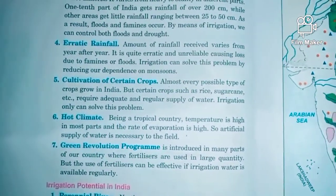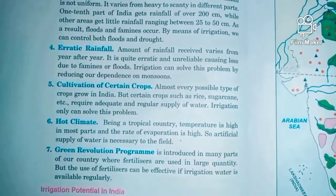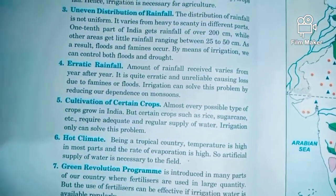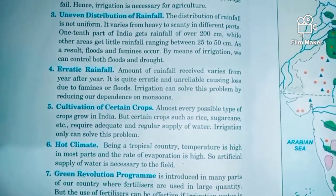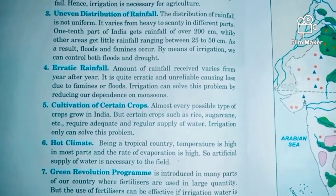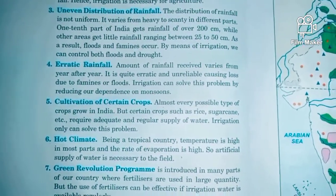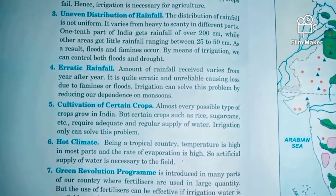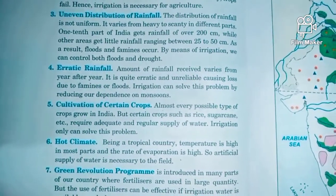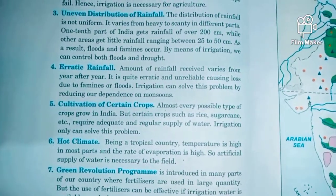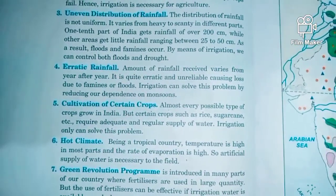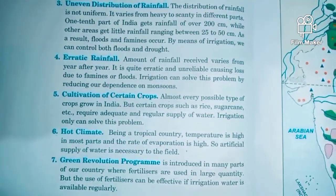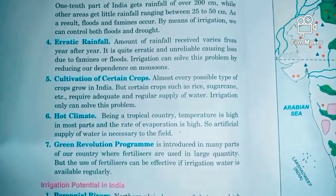Another reason is the cultivation of certain crops. Some areas tend to cultivate specific crops every year, like rice or sugarcane, but these crops require a large and regular supply of water. In the off-season, a good amount of water is needed, and that can only be provided through irrigation facilities. Though India cultivates all types of crops, some crops require a huge amount of water.